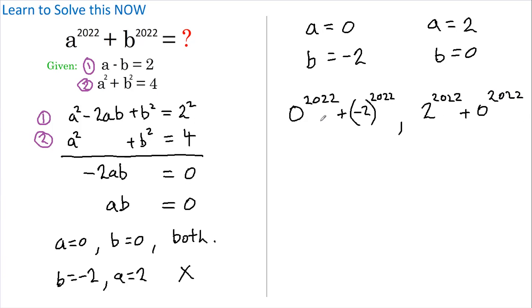So 0 to the 2022 is obviously 0, so we're left with 2 to the power of 2022. And since the power here is even, the negative sign disappears. Over here, this is obviously 0, so we're left with 2 to the power of 2022.